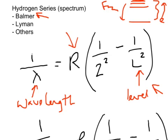And this R is something called the Rydberg constant, R-Y-D-B-E-R-G, Rydberg constant, which is 1.097 times 10 to the 7, and that's meters.